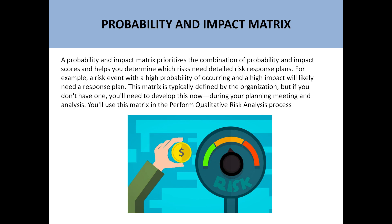Whenever we talk about the Perform Qualitative Risk Analysis process, in this process we identify the risk and define the probability and impact so that we can do risk response planning. Probability means the chances of occurrence of that event. For example, if you have identified a risk ABC, you will identify what is the probability of that risk occurring — for example, there may be a 50% chance that this risk will occur.